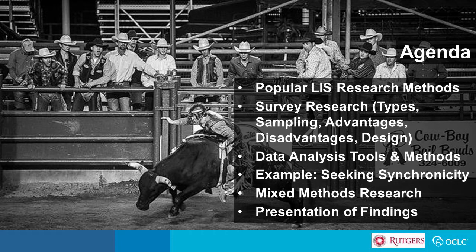We'll talk about some of the popular library and information science research methods identified in the literature, and we'll obviously discuss survey research — the types, sampling, advantages, disadvantages, and design. We'll also cover data analysis tools and methods, and give examples from a project that Marie and I completed with funding from the U.S. government — the Institute for Museum and Library Services. We'll also address mixed methods research and how to present findings.